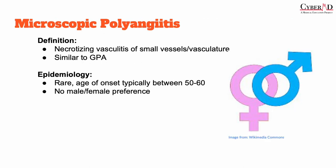Next, we'll be discussing microscopic polyangiitis, which is again an ANCA-associated small vessel vasculitis. It's characterized by necrotizing vasculitis of the small vessels, typically with pulmonary, renal, and skin involvement. Its manifestations are very similar to granulomatosis with polyangiitis. However, the nasopharynx and upper respiratory symptoms are usually not going to be occurring — this condition spares the nasopharynx. There's no sinusitis, no rhinitis. Additionally, there's no granuloma formation in this condition, which is evident in the name.